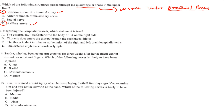Regarding lymphatic vessels: the cisterna chyli lies anterior to the body of L1 on the right side — this is the correct statement and the answer is A. The statement that the thoracic duct enters through the oesophageal hiatus is wrong. The thoracic duct terminates at the union of the left subclavian vein. The cisterna chyli contains whitish, not colorless, lymph.